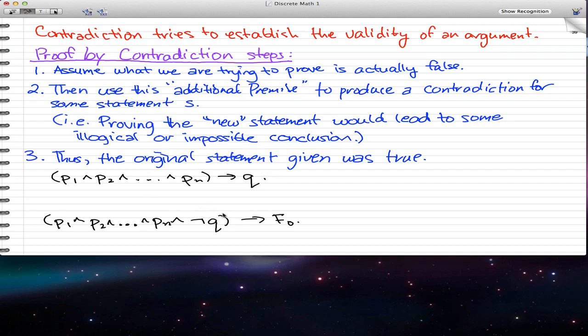So we made this Q false. We're trying to prove that this is a false statement. So we pretty much negated Q, and we put it on this left side. So we do P1 and P2 and Pn all the way to N and Q. And we're trying to prove that this is actually a false statement. That's where the implies false comes from.